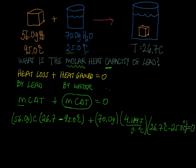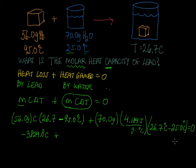We set that all equal to zero — the amount of heat lost plus the amount of heat gained equals zero. Multiplying these things out, we get negative 3,824.8 times the heat capacity of lead, plus 497.896, equals zero.